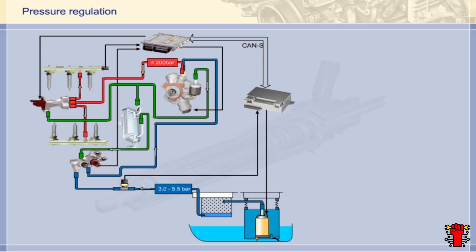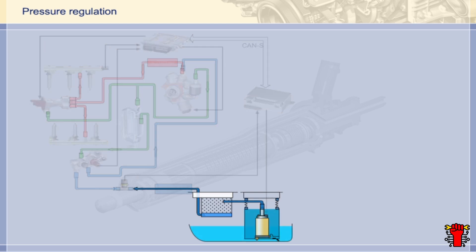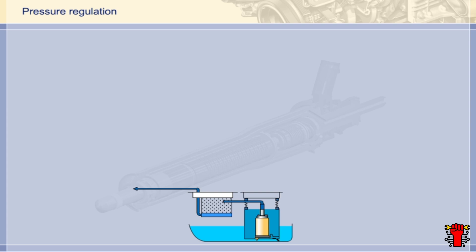The following chapter deals with the special features of the fuel system on the DE variant of the M272 engine. Let's concentrate first on the low-pressure side of the fuel circuit. How does it differ from the circuit on the port injection variant?